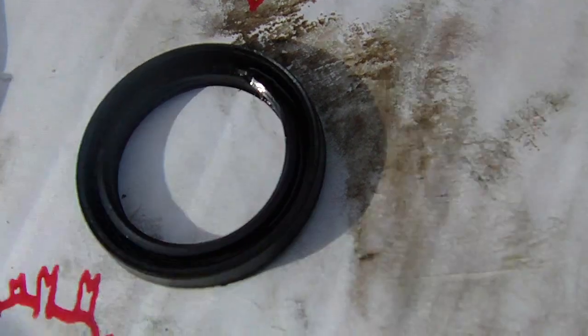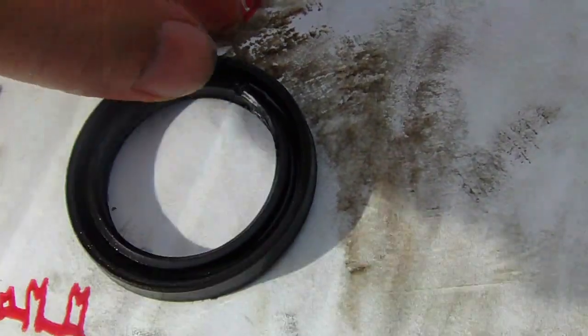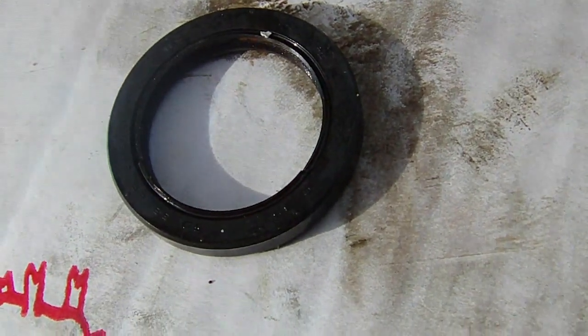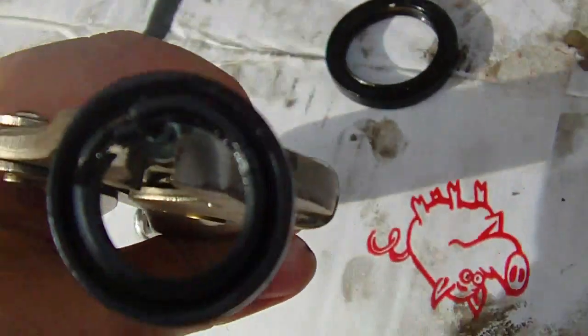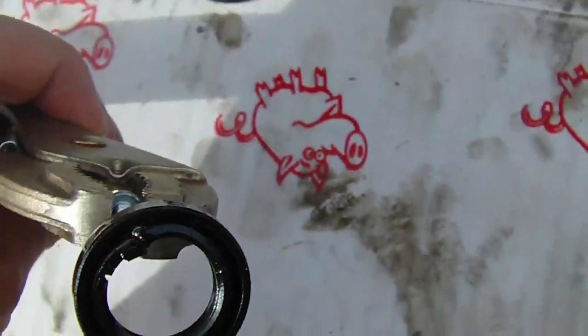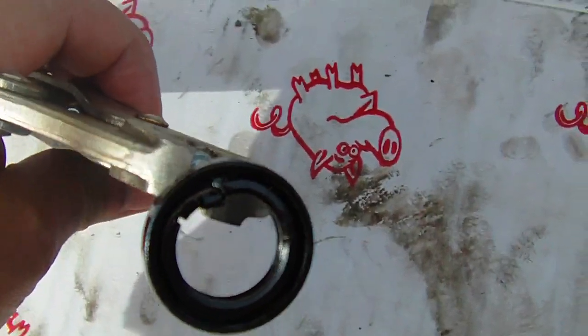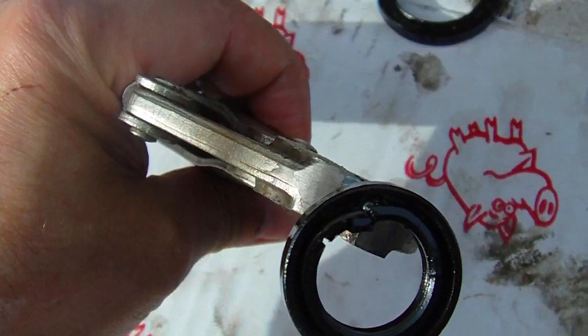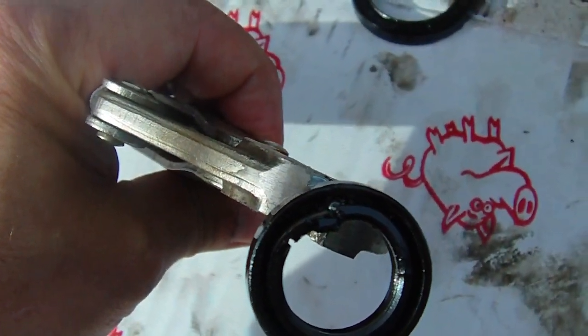This is the front crank seal. It pulled out really easy and it's just really brittle. You can see how it cracked and broke there, and I was able to pull it out with a pick. The oil pump seal I couldn't get it out. You can see that it's just brittle and it's cracked, and you can see right in there.